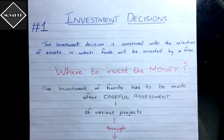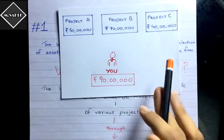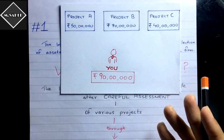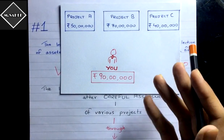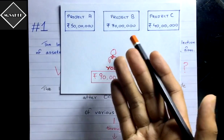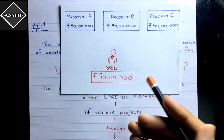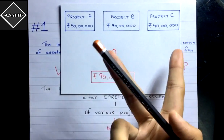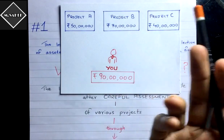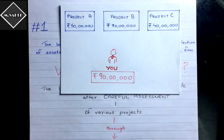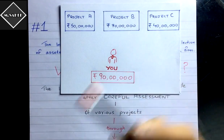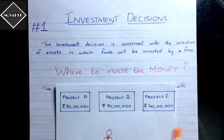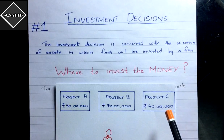For example, let's say you are a financial analyst of a company and you have been given the responsibility of investing 90 lakh rupees. How will you invest it? There are lots of opportunities in front of you — project A, project B, project C. Are you going to invest in only one project or two projects together? How will you select the project you want to invest in? That is the main question — where to invest the money.